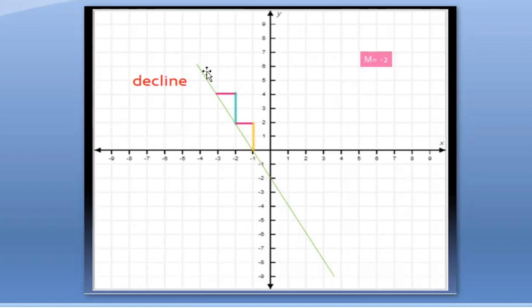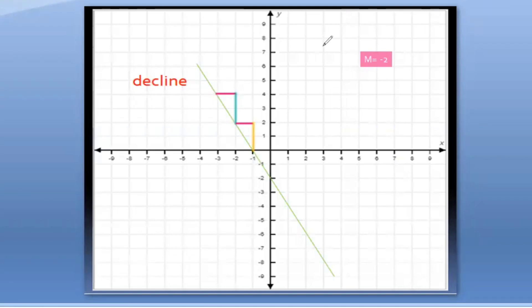Here we have a line that is getting decreased, declining. In this negative slope, as x is increasing, our y value is getting decreased dramatically. If our x value is 1, our y value is 2, so y is getting decreased — I will take minus 2 over 1, so the answer is minus 2. In this way, we can find out the slope from the given line.